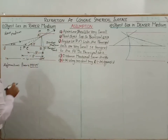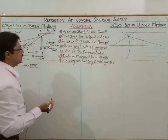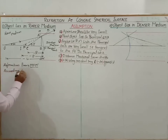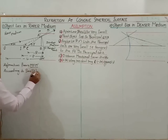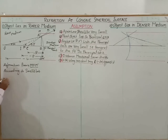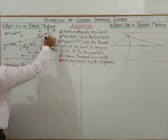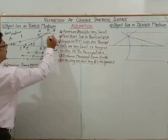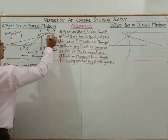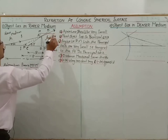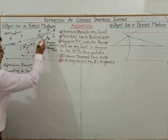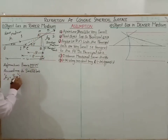According to Snell's law, applied at aperture MPM': the refractive index of the second medium with respect to the first equals sine of angle i divided by sine of angle r. The rarer medium has refractive index mu1 and the denser medium has refractive index mu2.